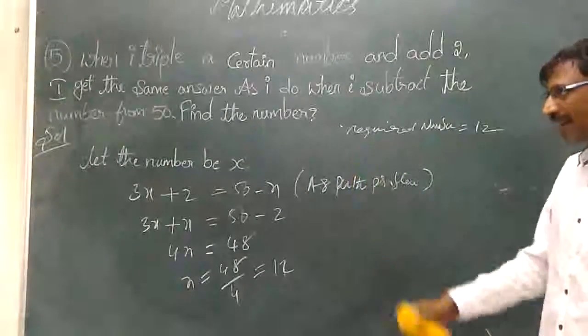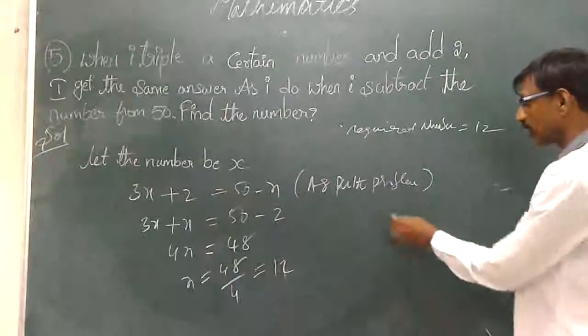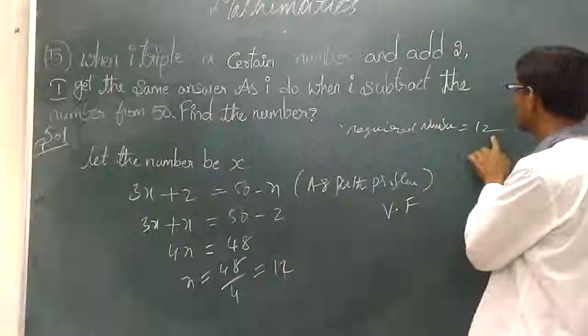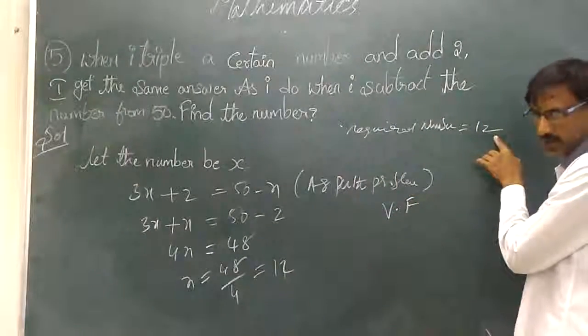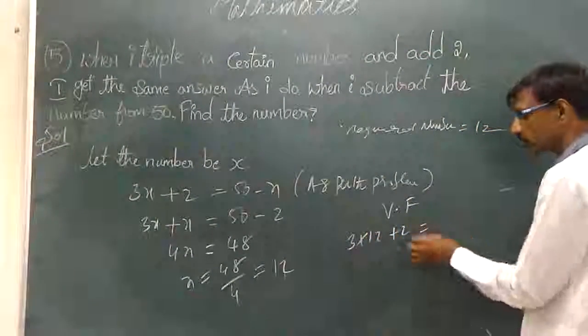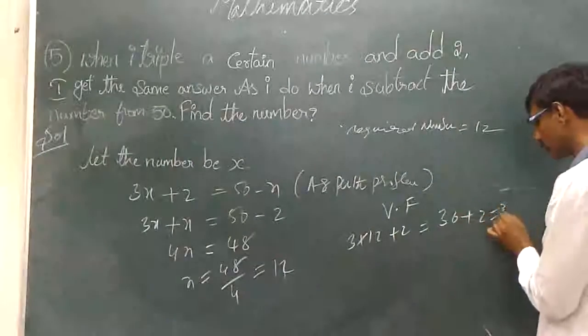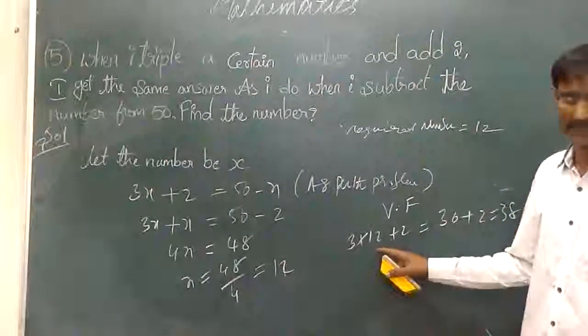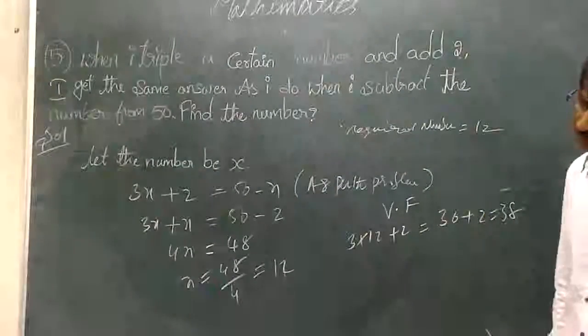When you take verification, 3 times the number, my number is how much? 3 times 12 plus 2, that is equal to 36 plus 2, that is equal to 38. 3 times 12, 36 plus 2 equals 38.